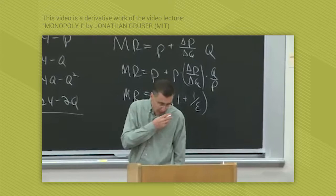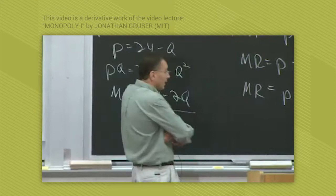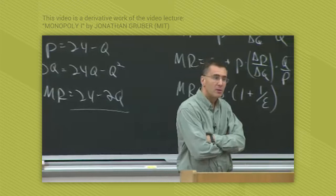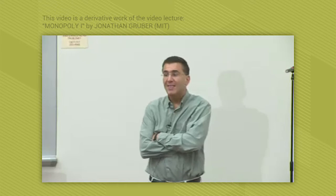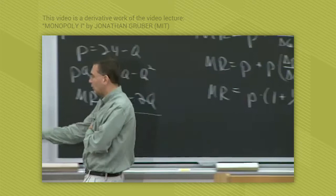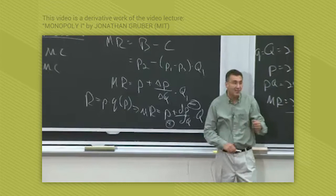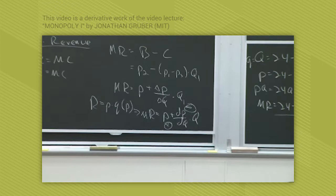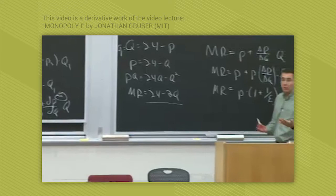Now instead, if we take a firm where the elasticity of demand is minus 1, the marginal revenue would be 0. What that says is: if you're a monopolist facing an elasticity of demand of minus 1, you make no money by selling the next unit, because the two effects exactly cancel. With an elasticity of demand of negative 1, what you make by selling one more unit is exactly offset by how much you have to lower the price on all your previous units.